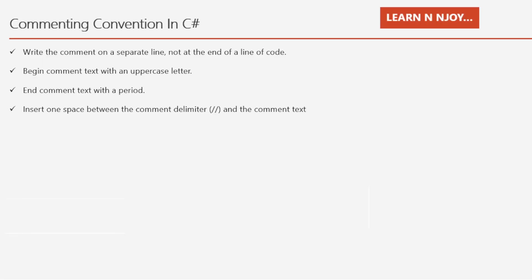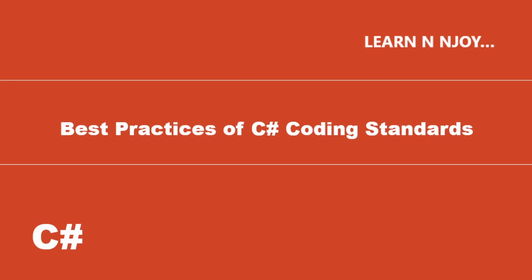Commenting conventions in C#. Number one: write comments on a separate line, not at the end of a line of code. Number two: begin comment text with an uppercase letter. Number three: end the comment text with a period. Number four: insert one space between the comment delimiter and the comment text. These are the guidelines to follow as part of commenting conventions in C#.